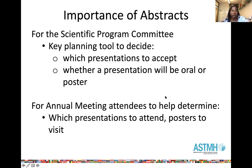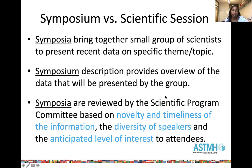Abstracts have two functions with respect to the Annual Meeting for ASTMH. The first is to interest the reviewers who will decide whether your abstract is accepted for presentation at the Annual Meeting, and whether the abstract will be accepted as an oral presentation or as a poster presentation. The abstract is also really important for the audience at the Annual Meeting as they try to decide which presentations they will attend. We typically have about 5,000 participants, with concurrent sessions and nearly 2,000 posters.